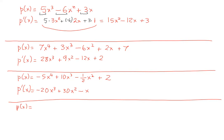One more: p(x) = 15x³ - 7x² + 5x - 3. Pause the video and try to find the derivative. The derivative of x³ is 3x², times 15 is 45x²; the derivative of x² is 2x, times -7 is -14x; the derivative of 5x is simply 5; and the derivative of -3 is 0. So p'(x) = 45x² - 14x + 5.